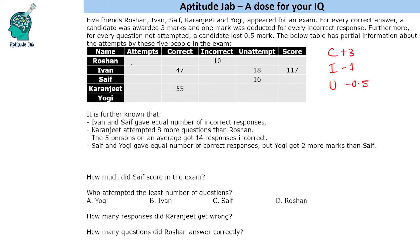If we look at Ivan, without even reading the statements, we know his correct answers, we know his unattempted questions, and we know his total score as well. So we can find his number of incorrect responses and eventually get the number of attempts.